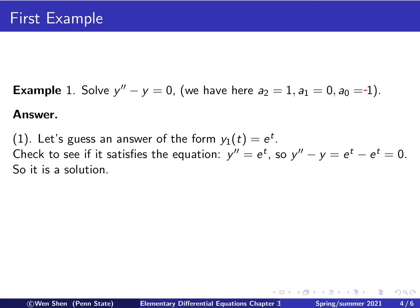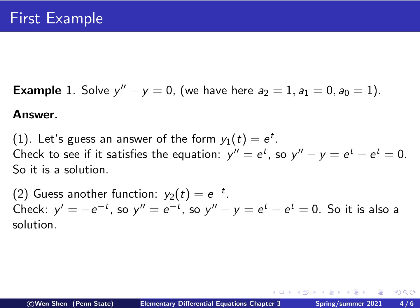A quick guess would be e^{-t}. If you differentiate it once, you get a negative sign; differentiate again, you get another negative sign, which cancels the first. So you get y'' = y again. Therefore, y2(t) = e^{-t} is another solution.